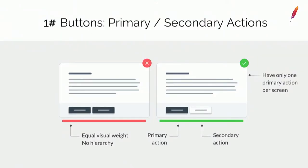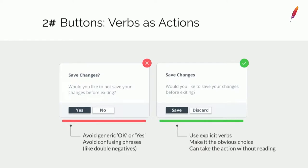Being consistent doesn't mean all buttons need to be the same — there are several types of buttons. Your forms and interface should always state what is the primary action. Primary actions are usually made with more contrast and color to direct the user on what you want them to focus on. Have only one primary action on the screen, and always use verbs as action labels. Avoid generic words like 'OK'; instead use verbs like delete, add, or save — because users think in verbs.